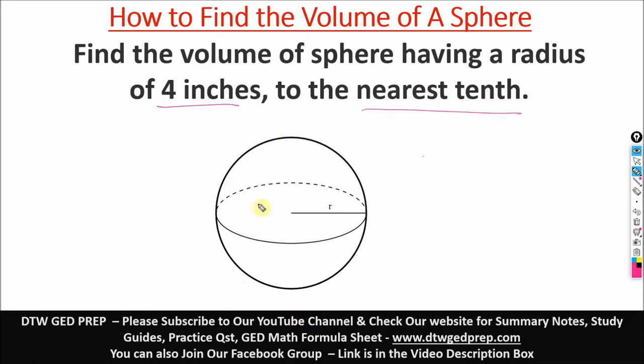This is a sphere. Let me quickly differentiate the difference between a sphere and a circle. A sphere is a three-dimensional figure, while a circle is just a two-dimensional figure. Three-dimensional, it has a volume.